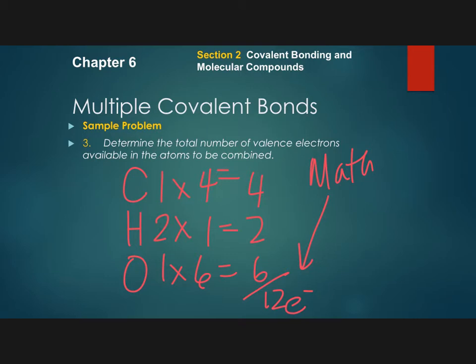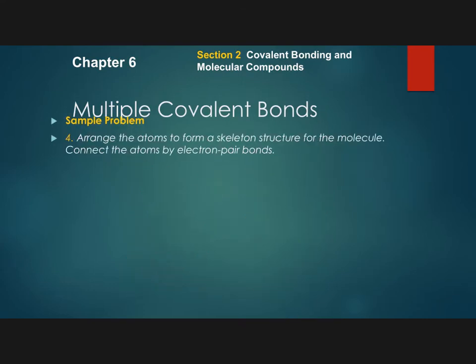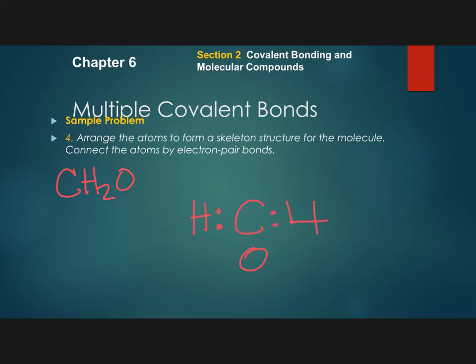This next step asks you to form a skeleton structure of the molecule. For CH₂O, we're going to put carbon in the center, and you can choose which side to place the hydrogen atoms and the oxygen. We make sure to put two dots in between each connected pair of atoms, then move on to the next step.